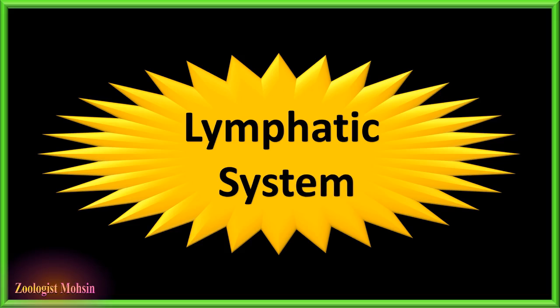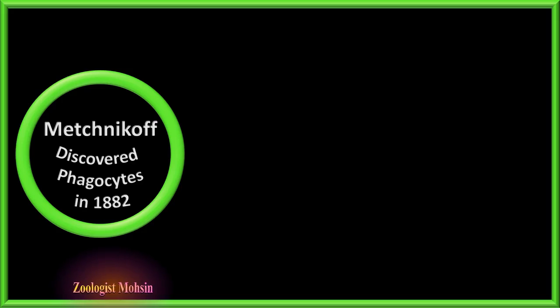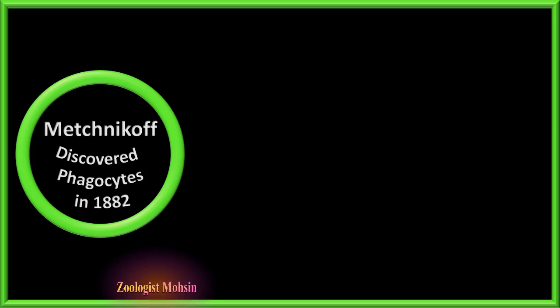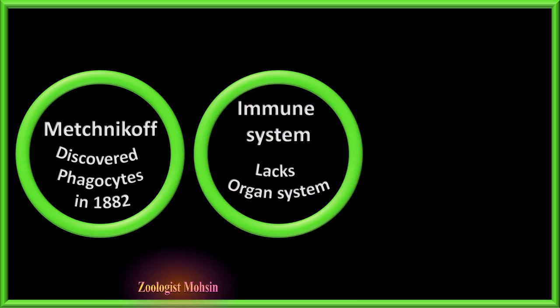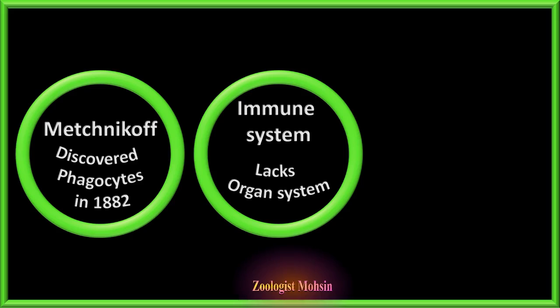Let's understand the structure and functions of the lymphatic system today. In 1882, a Russian zoologist Elie Mechnikov discovered cells which have defensive roles in the body, and he gave the name phagocytes — a name still in use today. This system of the body is the immune system.